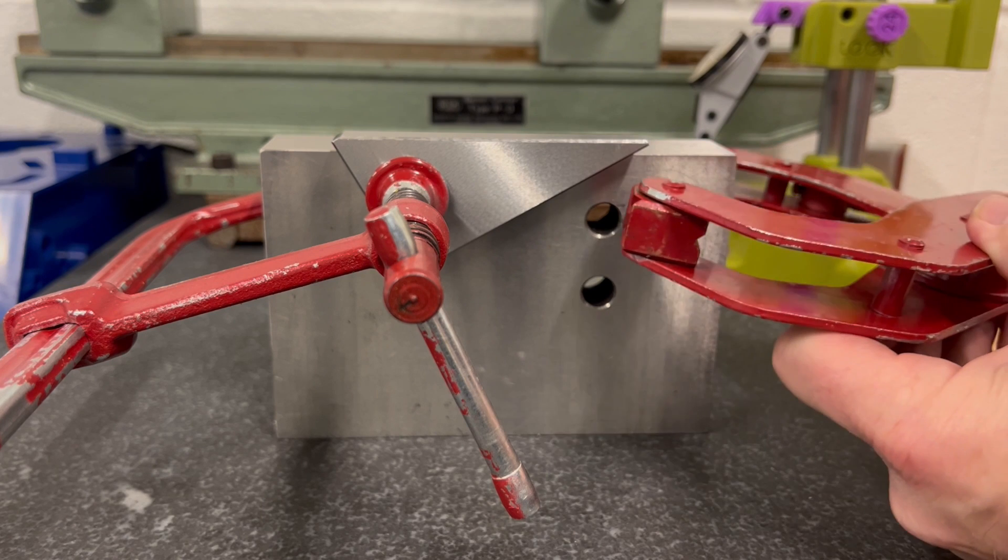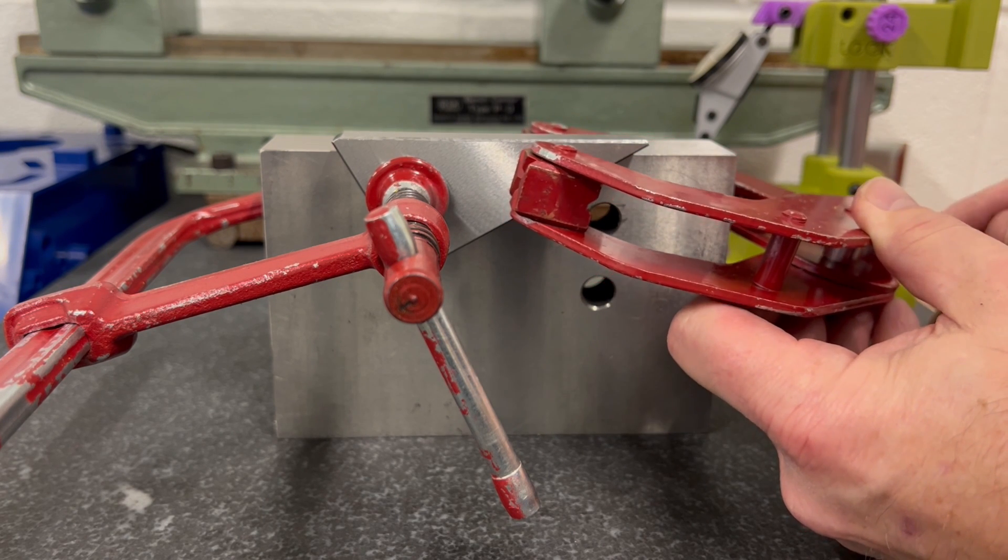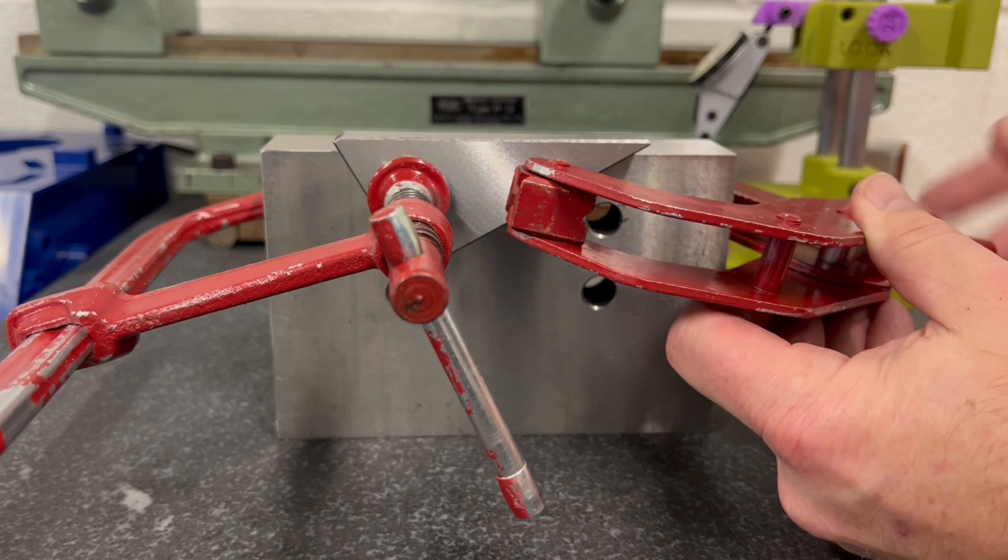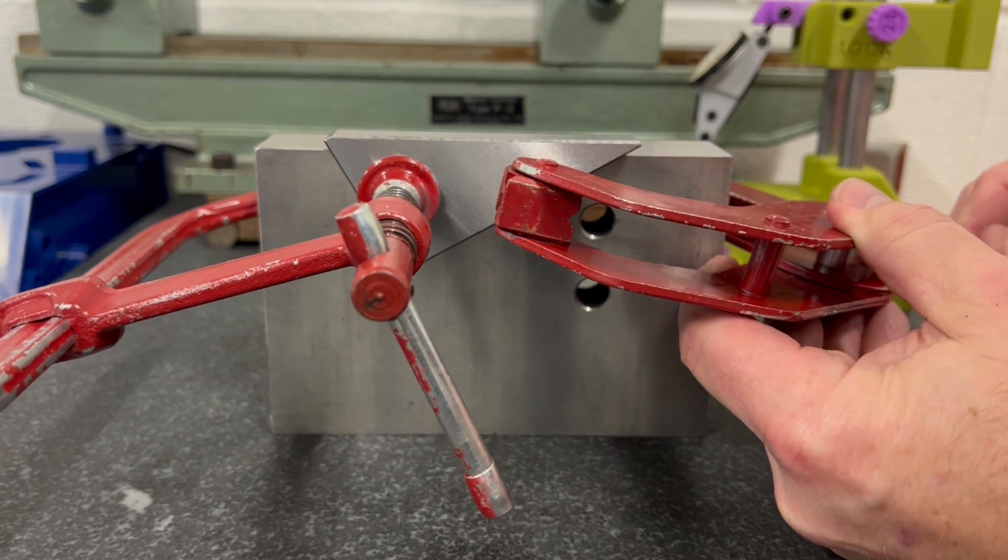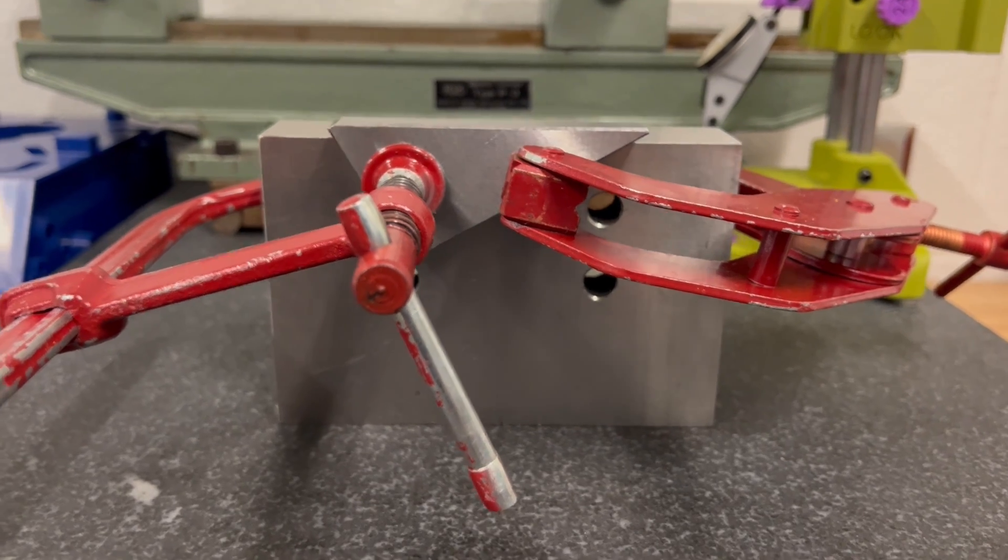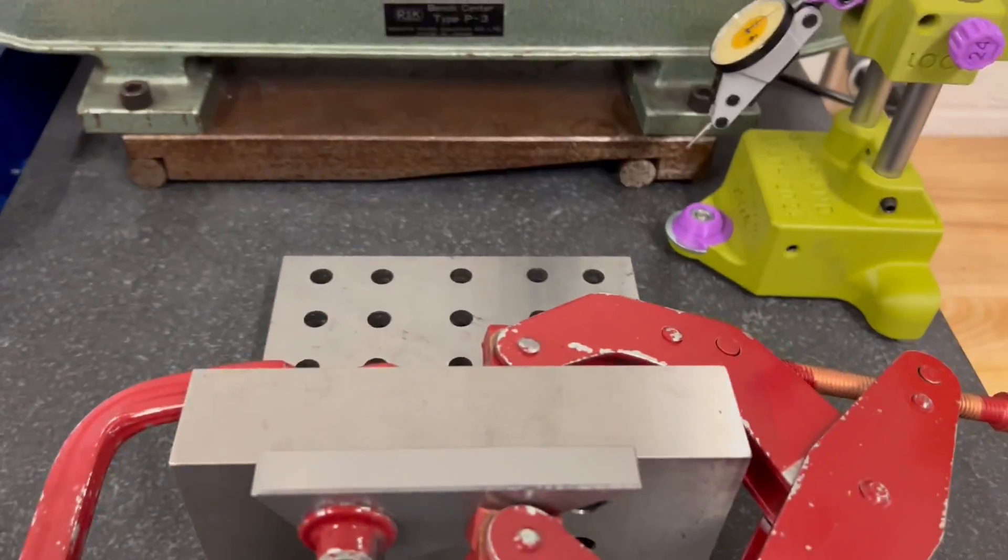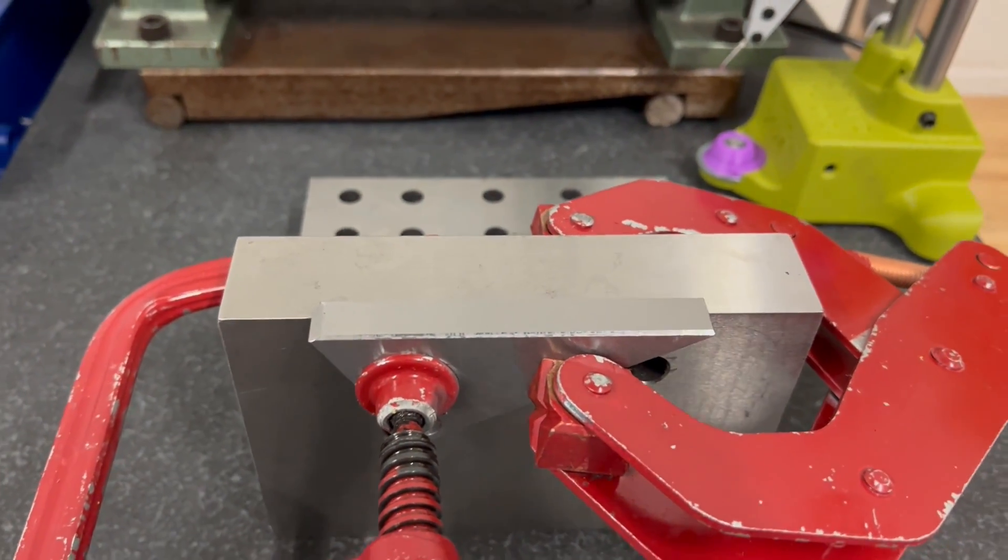We have our second clamp. We'll use our second clamp here a little further down because we want everything to be below this surface. Now with this setup secure, we can now bring this to the grinder and grind our 30 degrees on top.